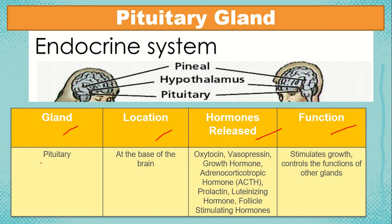First and foremost, we have the pituitary gland, located at the base of the brain. It releases hormones such as oxytocin, which is located in the tissue or organ of the uterus and mammary glands. It stimulates the uterine muscle and also releases milk from the mammary gland, meaning this hormone is responsible for milk production.